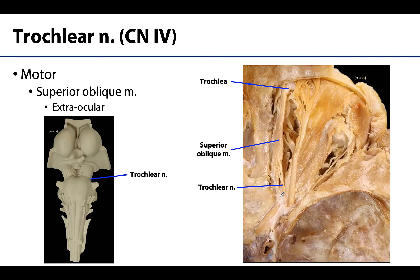The trochlear nerve, cranial nerve IV, is entirely efferent or motor. It innervates the superior oblique muscle, and is named after the trochlea, which changes the direction of the superior oblique's attachment. This nerve is unique in that it emerges from the posterior aspect of the brainstem, then makes its way through the superior orbital fissure before reaching the superior oblique muscle.